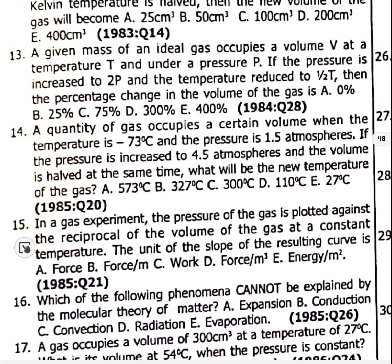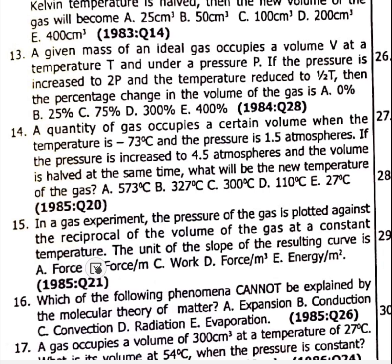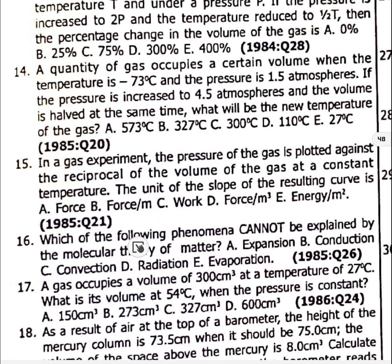Questions 10 through 14 involve calculations. Question 15: In a gas experiment, the pressure of a gas is plotted against the reciprocal of volume at constant temperature. The unit of the slope of the resulting curve is work — option C.